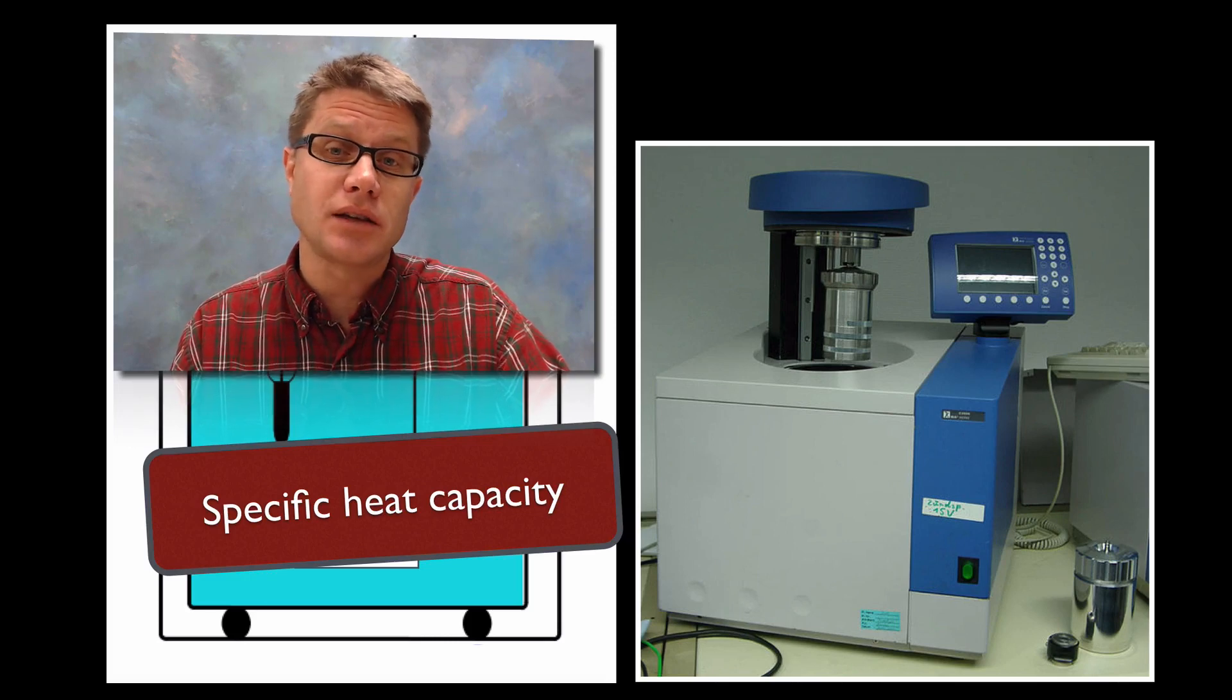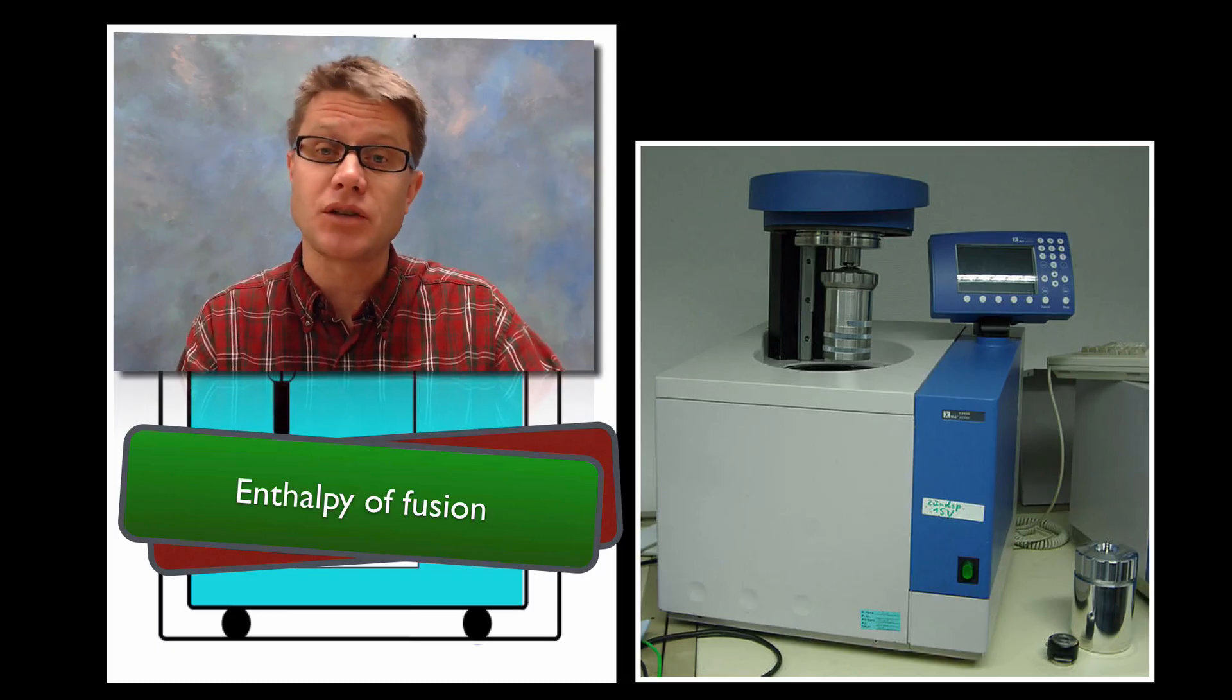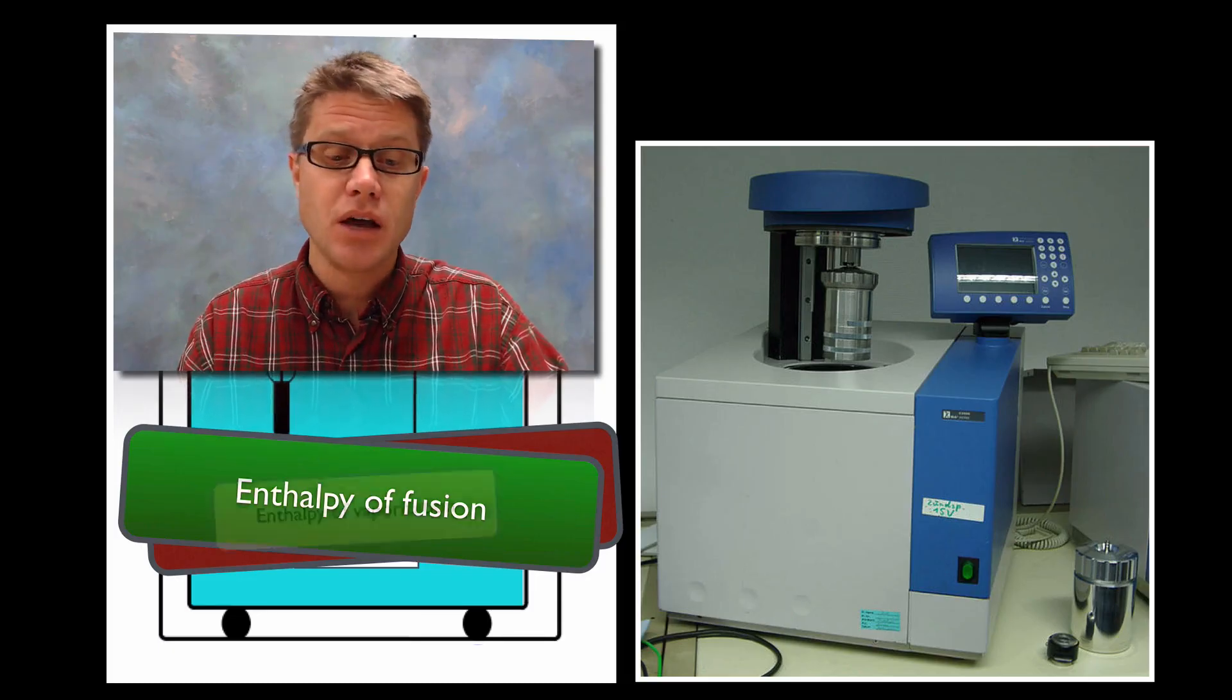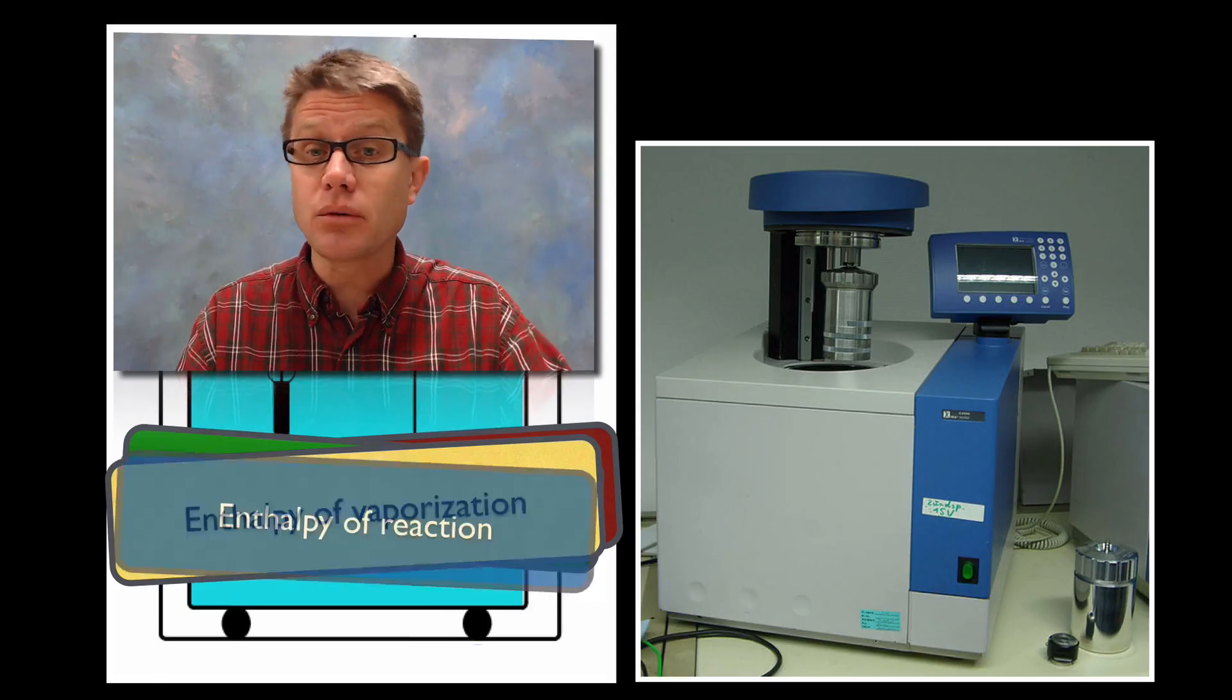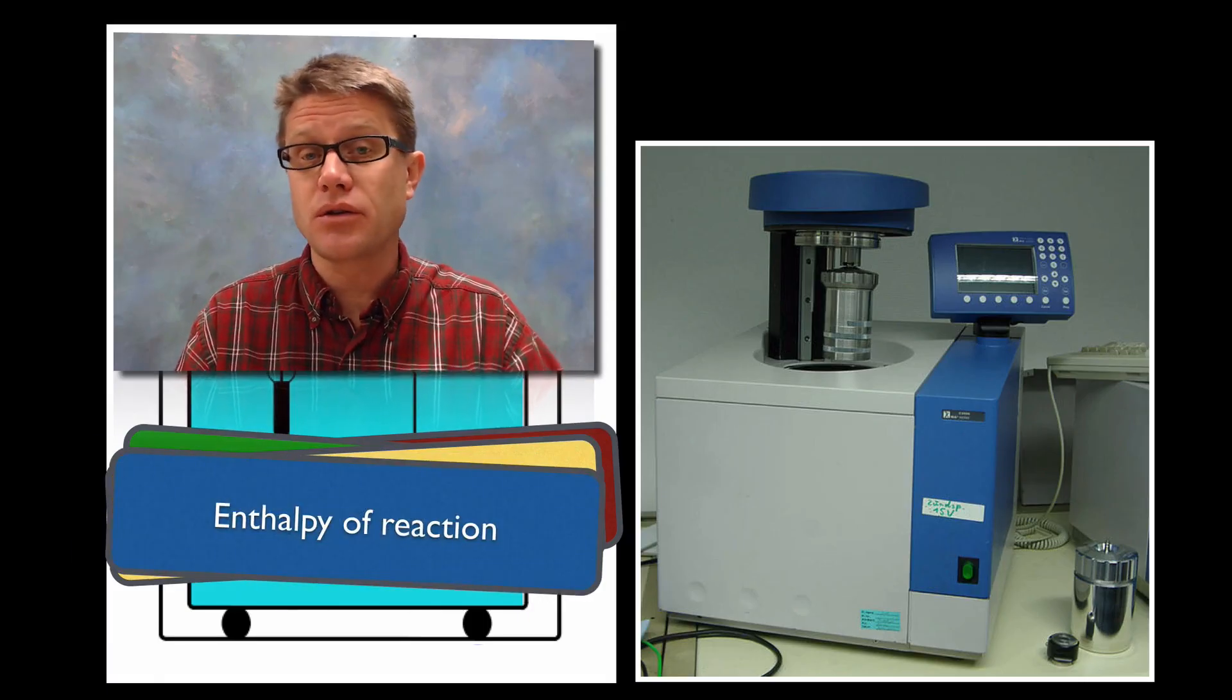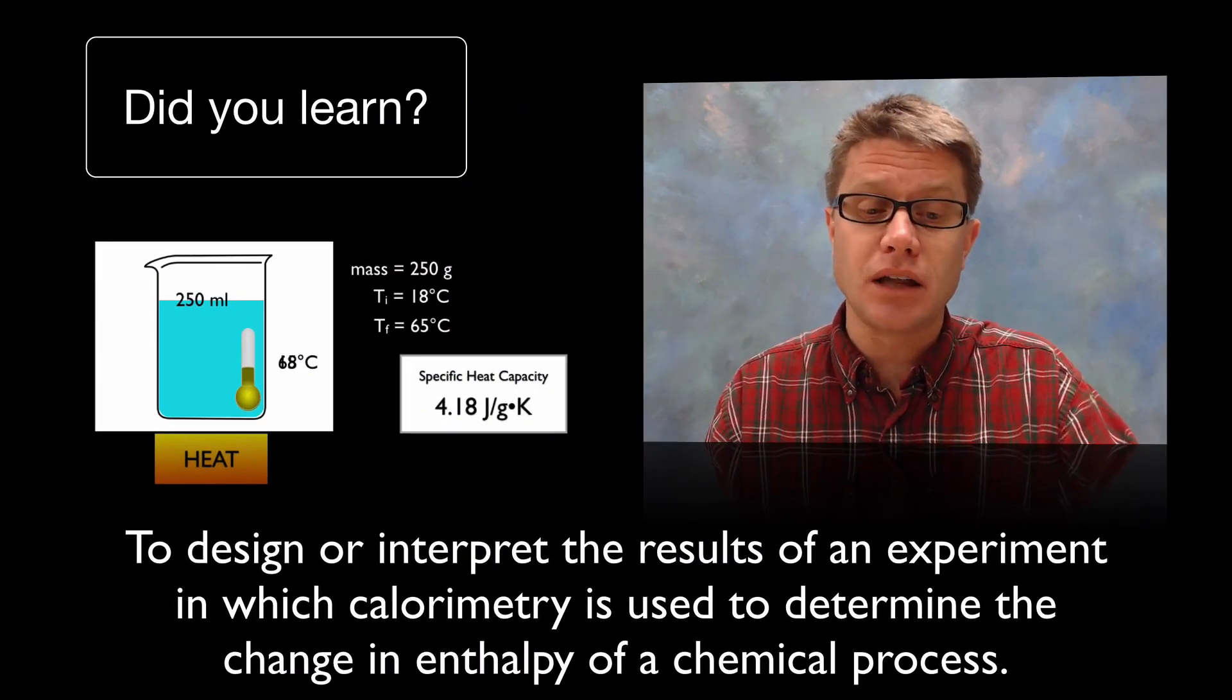We could use that to measure specific heat capacity, enthalpy of fusion—that's when we're going from a solid to a liquid or backwards—we can measure enthalpy of vaporization as we're going from a liquid to a gas, or we can just measure that enthalpy of reaction. We can measure endothermic and exothermic reactions. And so that's the role of a calorimeter.